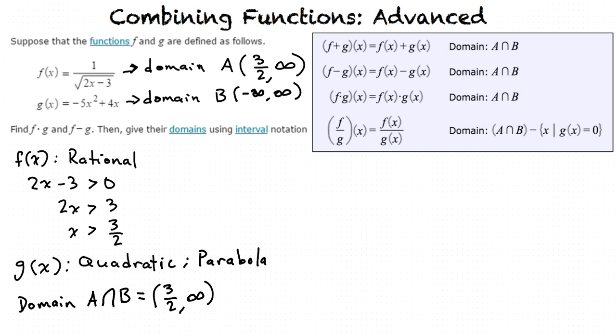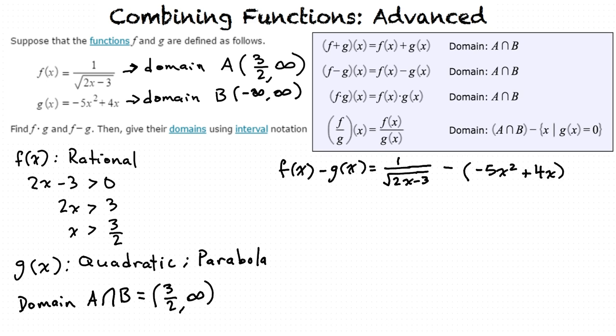To subtract f and g, we do just that. Take 1 over the square root of 2x minus 3 minus the quantity of negative 5x squared plus 4x. We can simplify this by distributing this negative on the right side. We now have 1 over the square root of 2x minus 3 plus 5x squared minus 4x. This cannot be simplified any further, so this is our final answer with a domain of 3 halves to infinity.